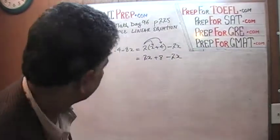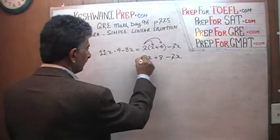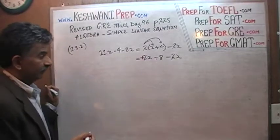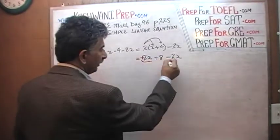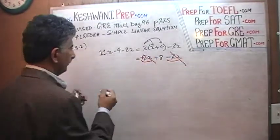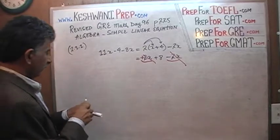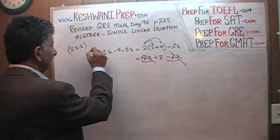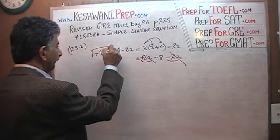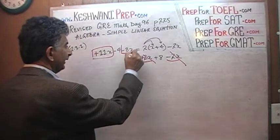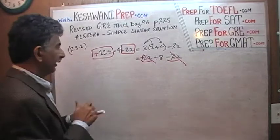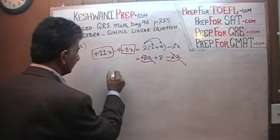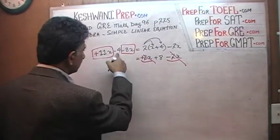And then what we notice here is that here we have the positive 2x. If it doesn't have any sign in front of it, obviously it is positive. Here we have positive 2x, here we have negative 2x, they drop out. And then here we combine what is known as the like terms. We see positive 11x here, we see negative 8x here, positive 11x and negative 8x gives us 3x minus 4.